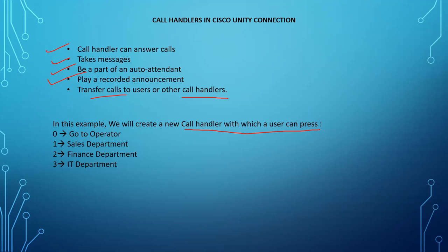I'll show you on the CUCM and Unity how we can create and configure the call handler. In this example, whenever someone presses zero it will go to operator, press one for the sales department, press two for finance, press three for IT. These are the inputs I'm going to configure.